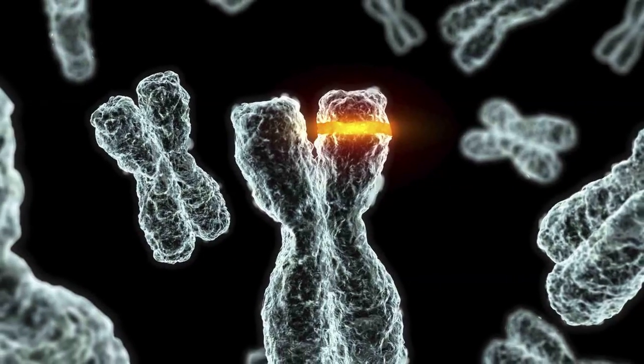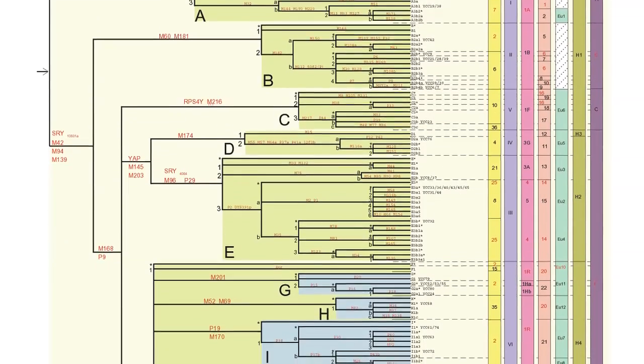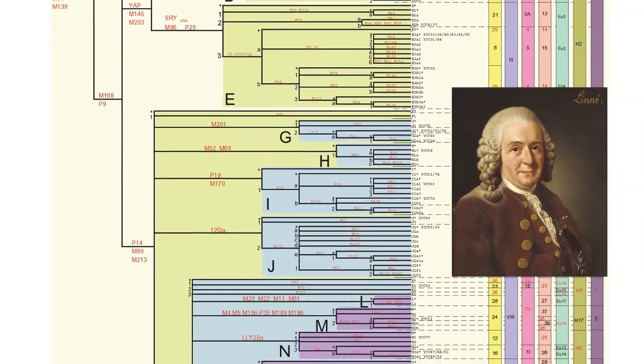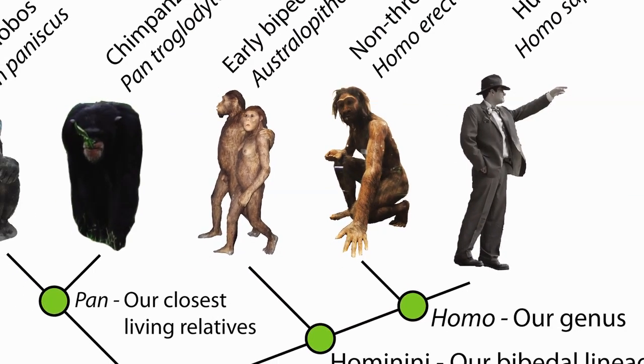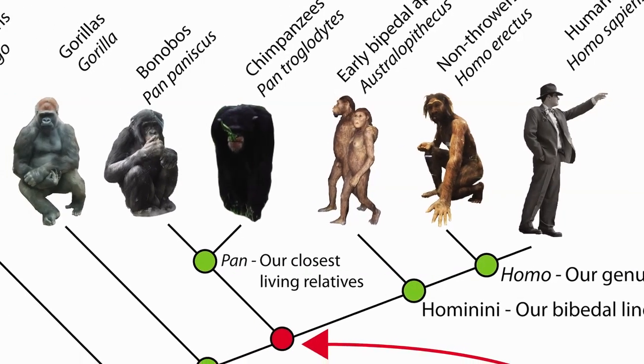All people who share a particular mutation are known as a haplogroup. Due to subsequent mutations, there are haplogroups within haplogroups, much like the nested hierarchy deduced originally by Carolus Linnaeus. It is possible to determine which mutations are unique to humans by performing the same comparison between humans and other closely related animals, such as chimps and bonobos.